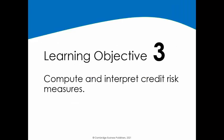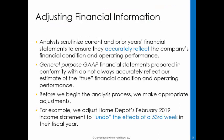In this objective, we will discuss ratios that can be used to measure credit risk. Ratios are only as accurate as the numbers used in the numerator and denominator. Thus, it is crucial to begin with high-quality inputs. A complete credit analysis uses adjusted financial numbers of the highest quality. As a prelude to the analysis process, we scrutinize current and prior years' financial statements to be sure that they accurately reflect the company's financial condition and operating performance. The reason is that GAAP financial statements do not always accurately reflect our estimate of the true financial condition and operating performance of the company.